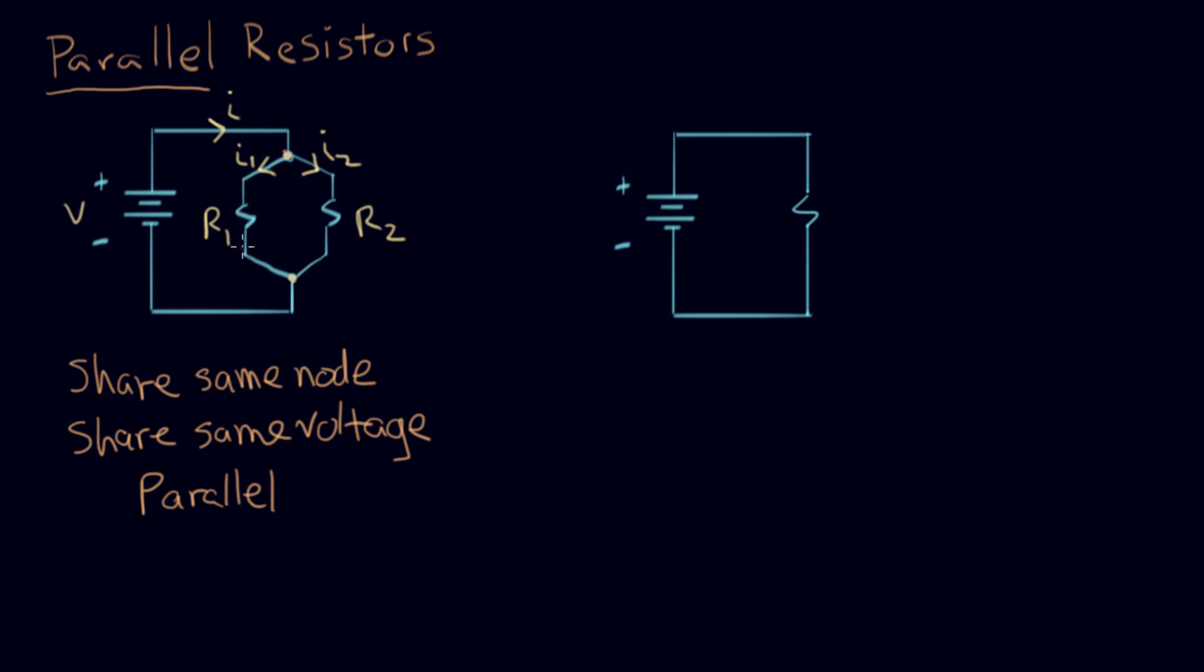Now we know any current that goes into a resistor comes out the other side. Otherwise it would collect inside the resistor and we know that doesn't happen. They rejoin when they get to this node and flow back to the battery. So the current down here is again I, the same one as up here.